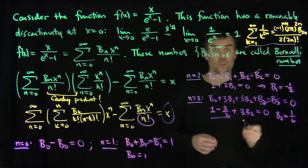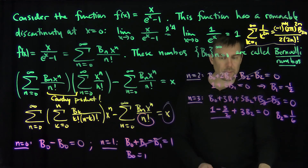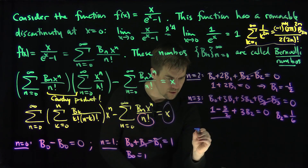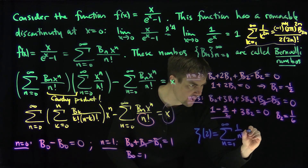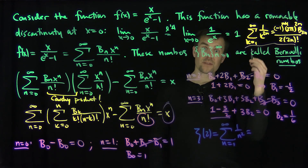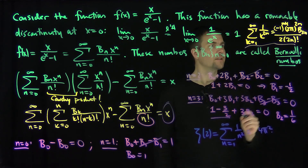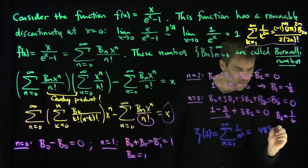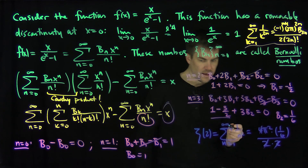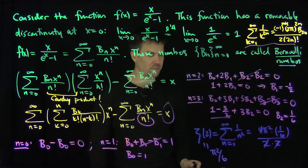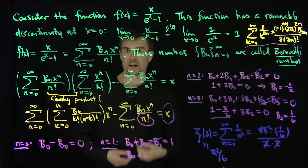Using this result — which we'll prove in further videos using properties of Fourier series, the Parseval theorem, and Poisson summation — we can deduce that when n equals 1 in the zeta formula, zeta(2), which is the sum from n=1 to infinity of 1 over n squared, equals negative 1 to the power 1+1 (which is 1), times 2π squared, times b_2 = 1/6, over 2 times 2 factorial. Simplifying, we get zeta(2) equals π squared over 6. By finding the Bernoulli numbers we were able to compute that zeta(2) = π²/6. Thank you very much.